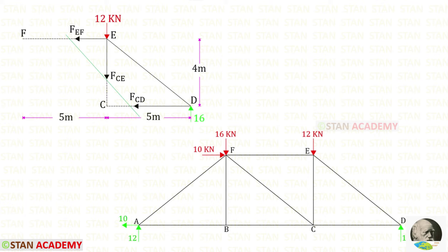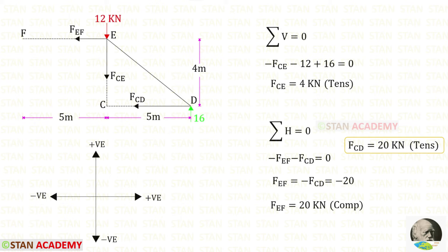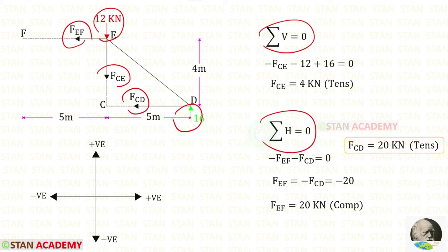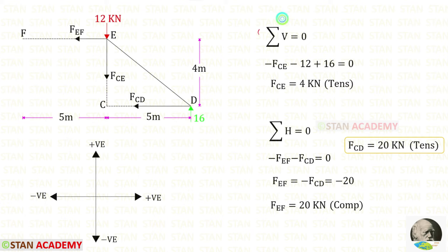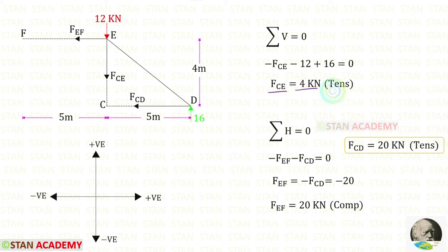Now I am going to make the second section. When I make this section, only three members are cut, so we are safe. I am going to take the right portion and analyze. As in the previous step, we give arrows wherever the members are cut and extend the members to the ends. Here there is no inclined force — all forces are either horizontal or vertical. We can use sigma V equals zero and sigma H equals zero to find the member forces very easily. Applying sigma V equals zero: the vertical forces are 12, FCE, and 16. The forces 12 and FCE are acting downwards, so both are negative. The reaction 16 is acting upwards, so it is positive. For FCE we get 4, and it is tensile.